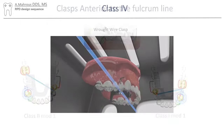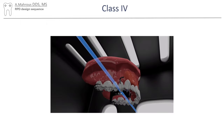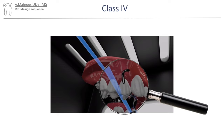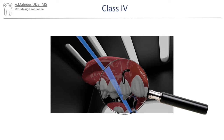Another special situation includes Class 4 cases, in which the edentulous segment exists on the anterior side of the partial. Because of this, stress-breaking I-bar clasps will need to be associated with distal rests in order to effectively disengage the undercut.